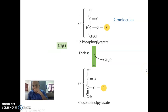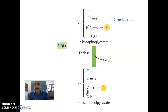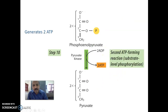Step 9: 2-phosphoglyceric acid is converted into phosphoenolpyruvate by the enzyme enolase. Two molecules are significant here. The enzyme enolase releases a water molecule during this reaction.